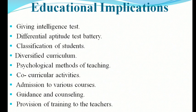The educational implications of Spearman's two-factor theory include: 1. Giving intelligence tests. 2. Differential aptitude test battery. 3. Classification of students. 4. Diversified curriculum. 5. Psychological method of teaching. 6. Co-curricular activities. 7. Admission to various courses. 8. Guidance and counselling.